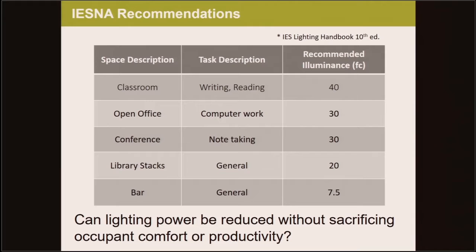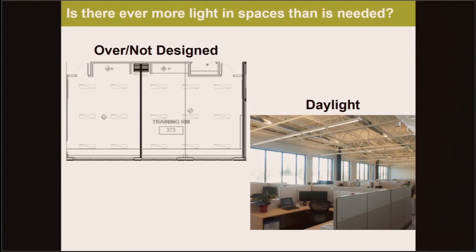So now we need to understand if there's ever more light in a given space than is actually needed. It turns out the answer is usually yes. A recent study I conducted found that commercial spaces were on average overlit by up to 20%. In many buildings, there isn't much thought put into the lighting design, as a contractor simply puts the same fixture on a uniform grid, project to project, without analyzing how much light is actually provided. When a lighting designer is involved, there's a much greater chance that the lighting illuminance will be more appropriate and in line with recommended levels.